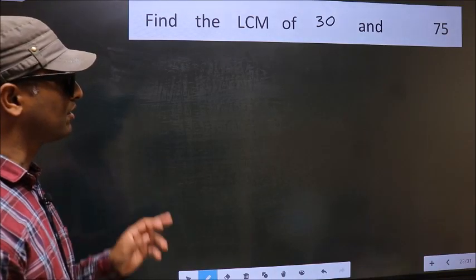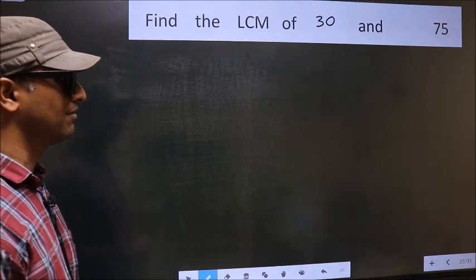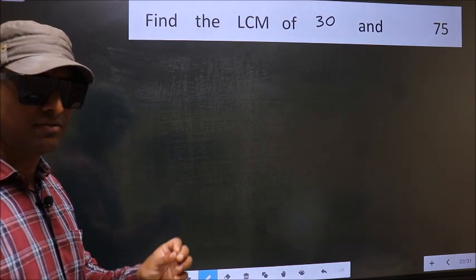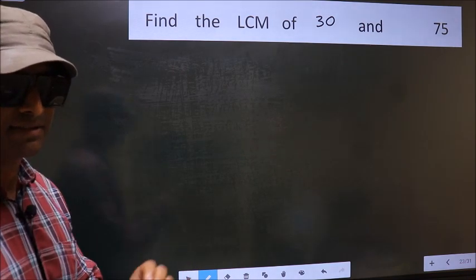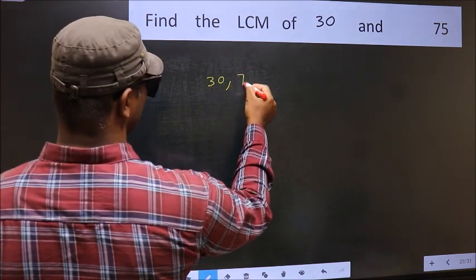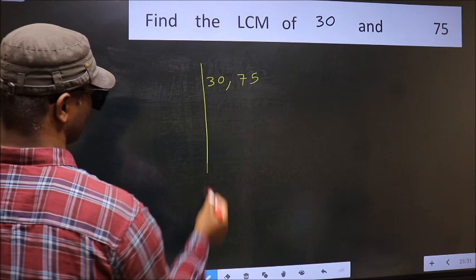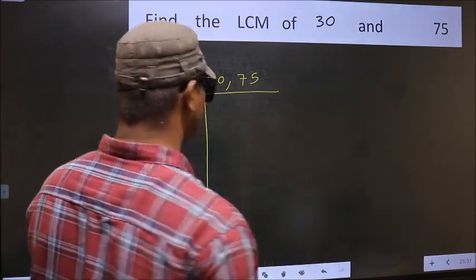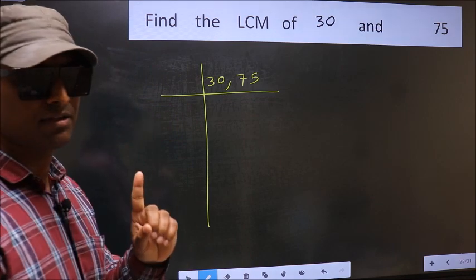Find the LCM of 30 and 75. To find the LCM, we should frame it in this way. 30, 75. This is your step 1.